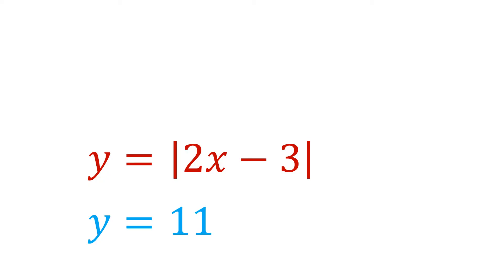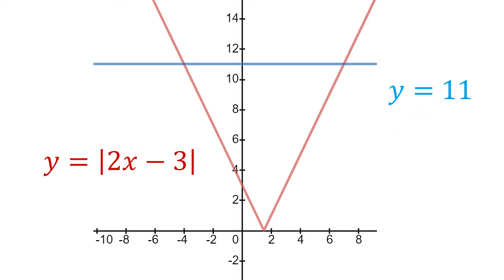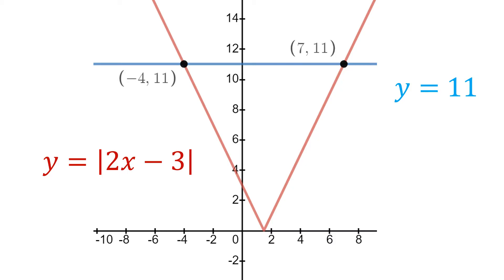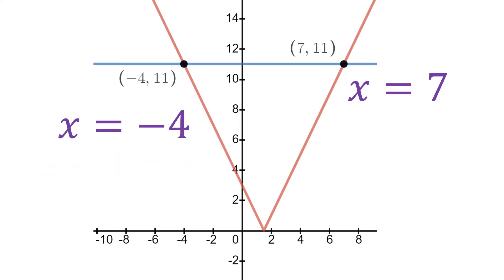So we can graph both of those — you'll see one in red and one in blue — and those graphs intersect at two points. On the left, the point is (-4, 11), and on the right, (7, 11). So going back to our original equation, remember that we're trying to solve for x, so what we actually care about graphically are the x-coordinates of those points of intersection: x equals negative 4, and x equals 7.